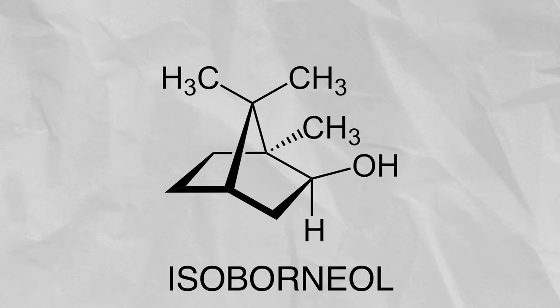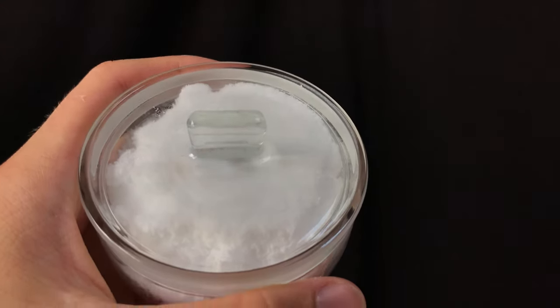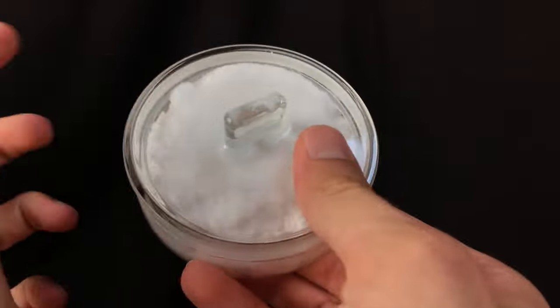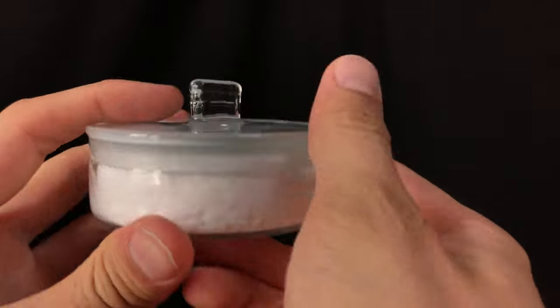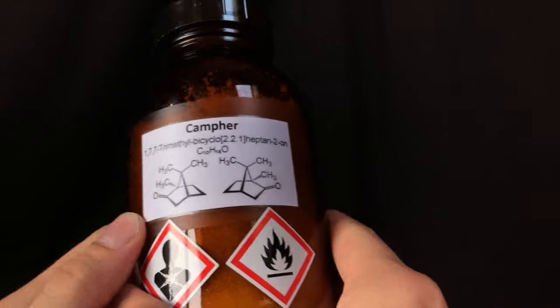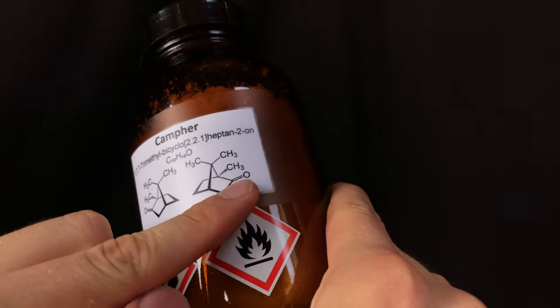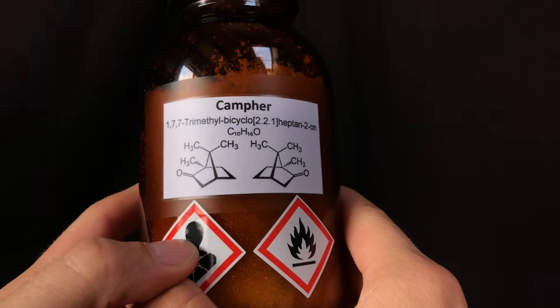Today I will be showing you how to make isoborneol. There are two reasons I want to make this strange compound. Firstly, you can make some really nice smelling esters with it, and secondly I have some camphor which I have never done an experiment with before. Camphor is a ketone and I never reduce the ketone to an alcohol, so it's time to try this.